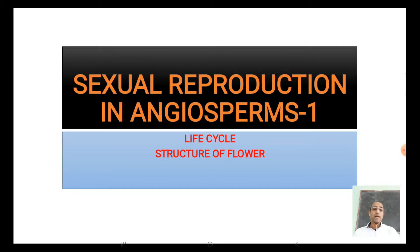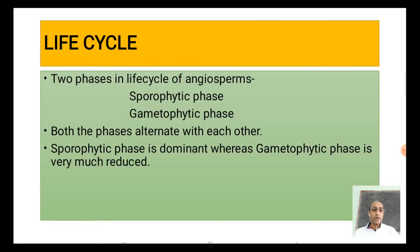As far as the life cycle of an angiospermic plant is concerned — the time period from birth to natural death constitutes the life cycle — it consists of two phases. The first is the sporophytic phase and the second is the gametophytic phase. These two phases alternate with each other. The sporophytic phase is dominant, whereas the gametophytic phase is very much reduced.